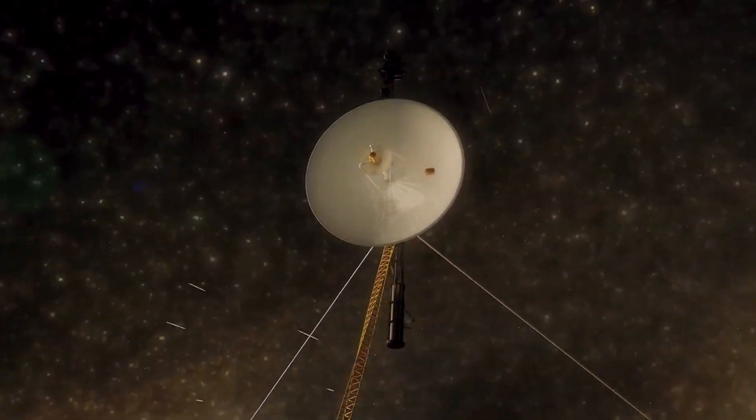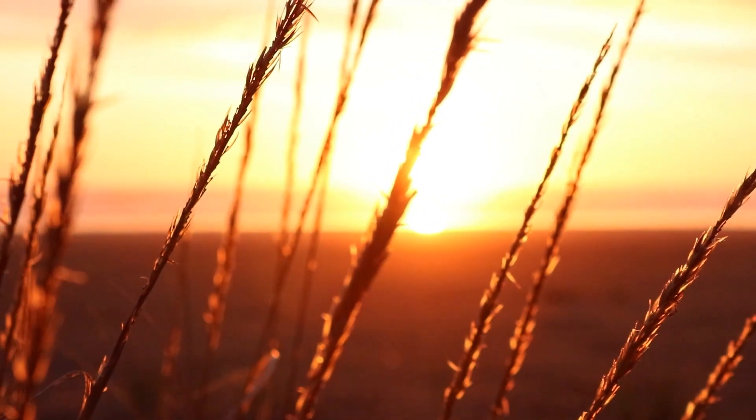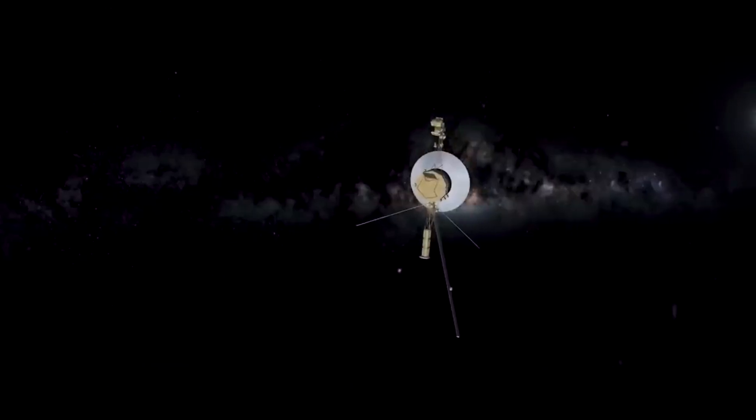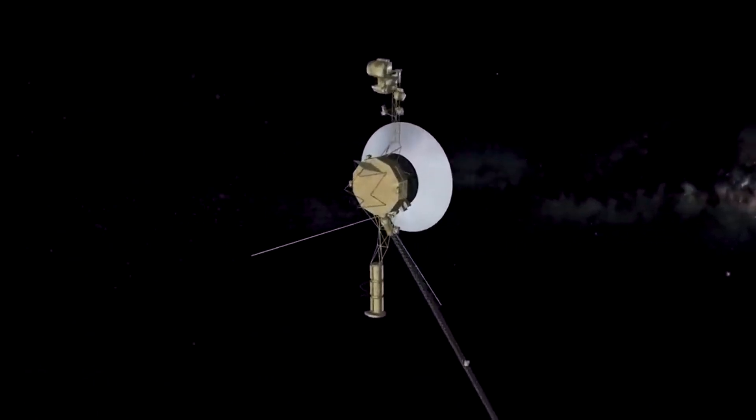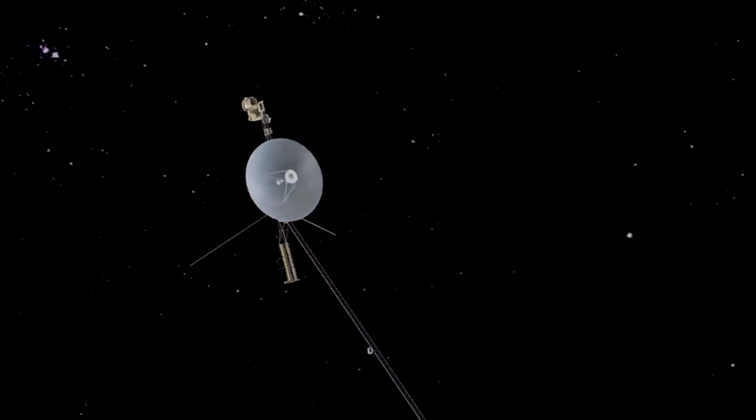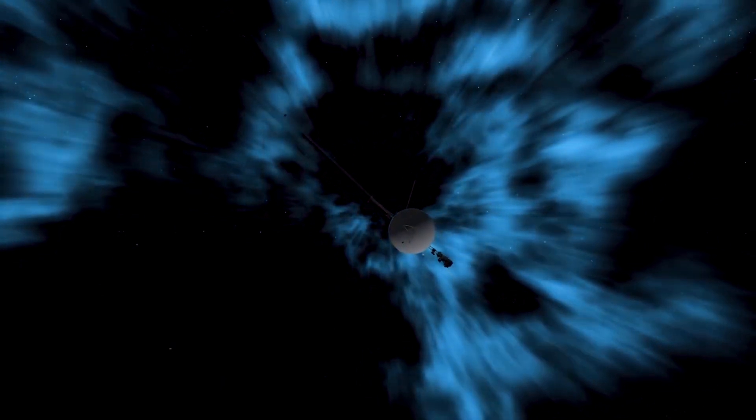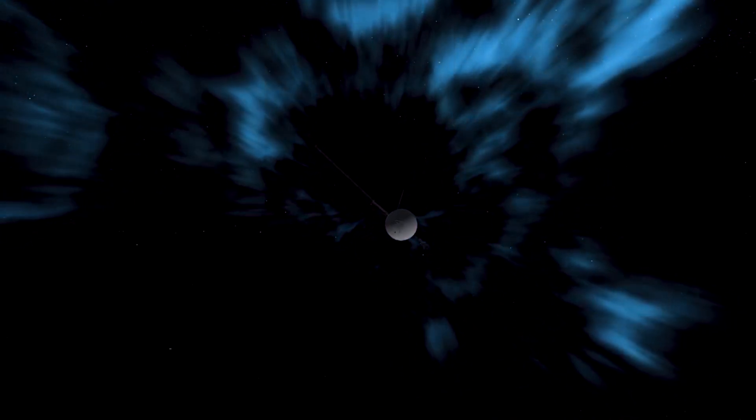Voyager 1 and Voyager 2, identical in every detail, were launched within 15 days of each other in the summer of 1977. After nearly 45 years in space, they are still functioning, sending data back to Earth every day from beyond the solar system's most distant known planets. They have traveled farther and lasted longer than any other spacecraft in history.